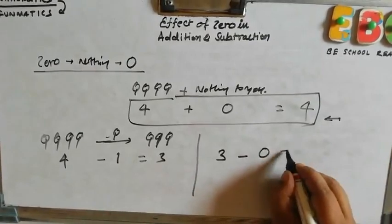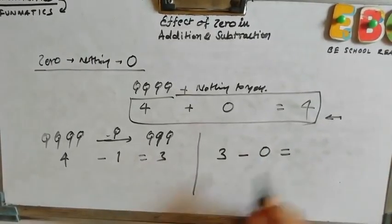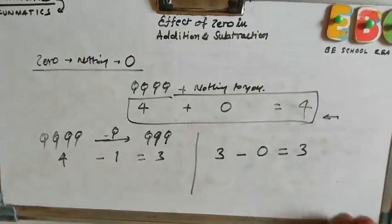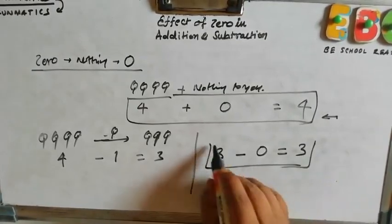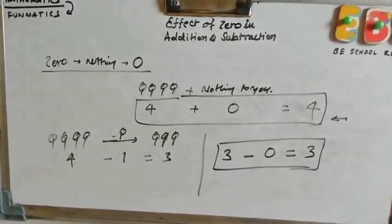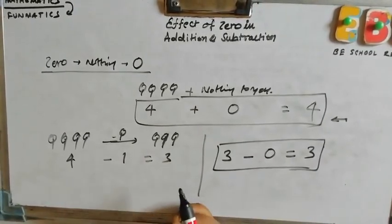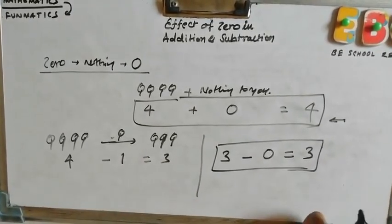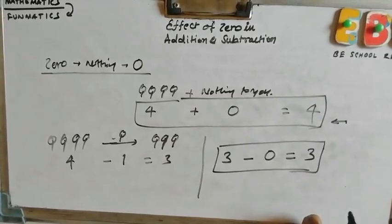So, how many lollipops you have right now? You have all three. So, what you see is subtracting zero from the number will not change the number.